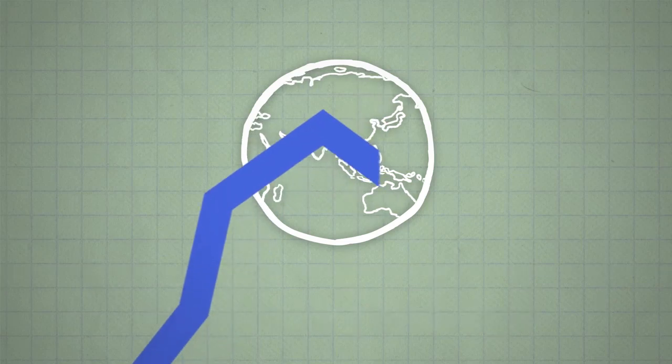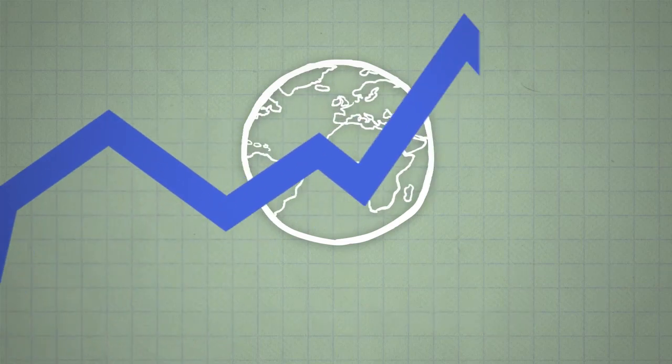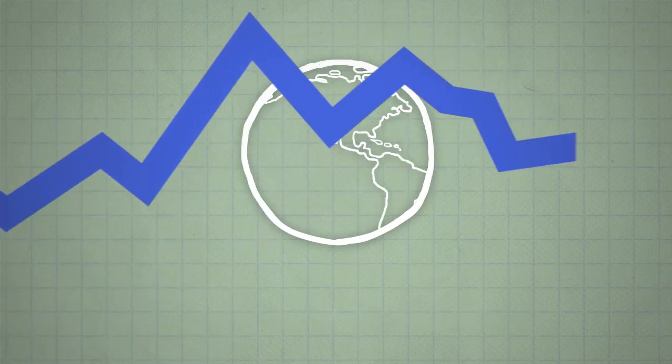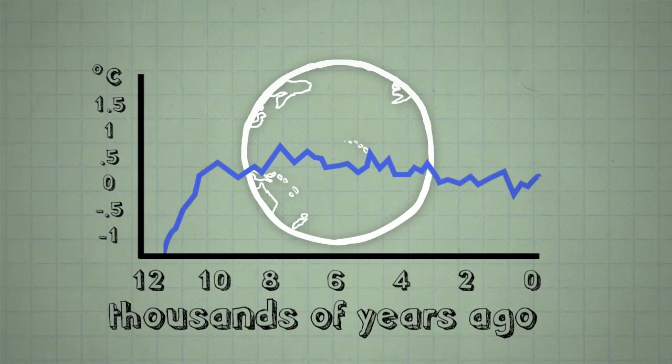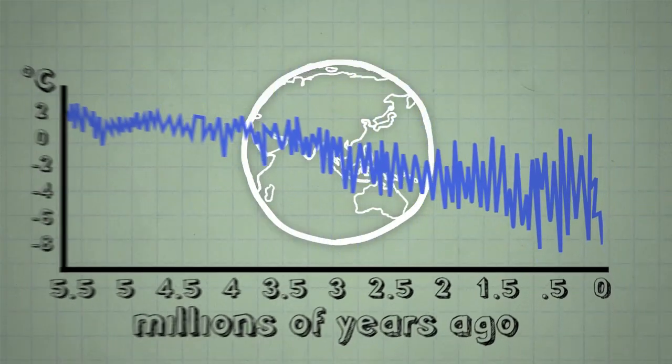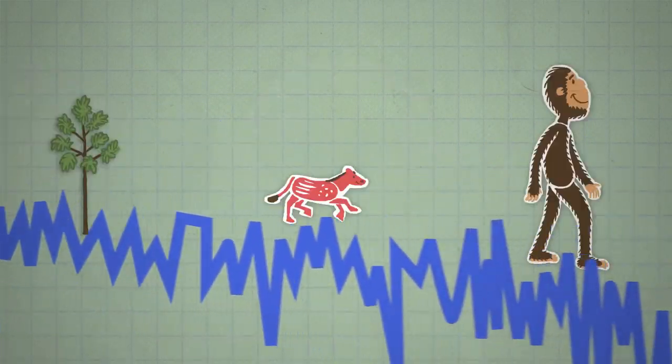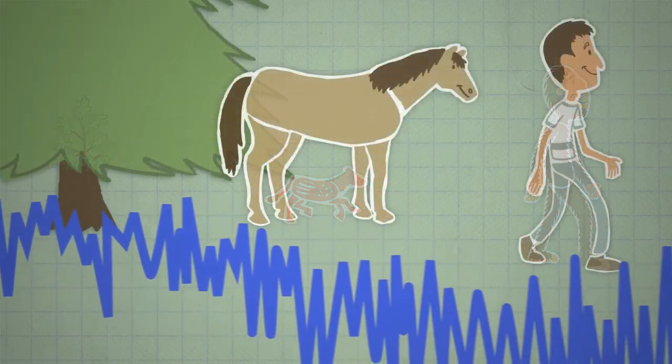The important thing for life on Earth, though, is that these big climate changes have always happened gradually, over many thousands or even millions of years. That has given plants, animals, and people plenty of time to adapt to these changes.